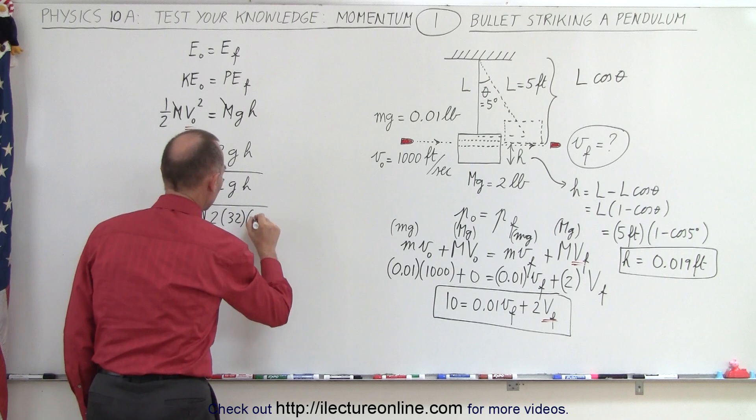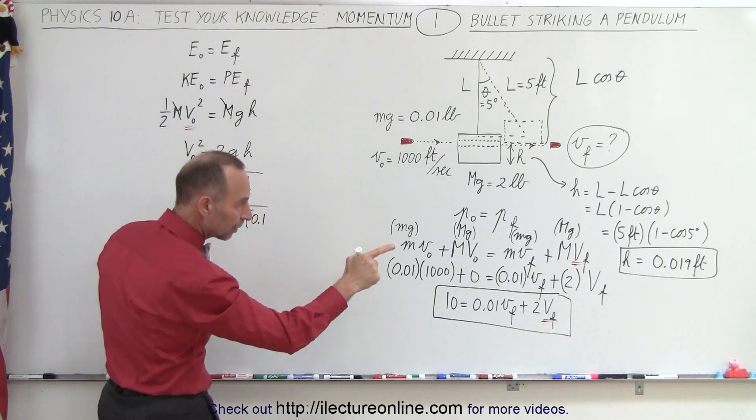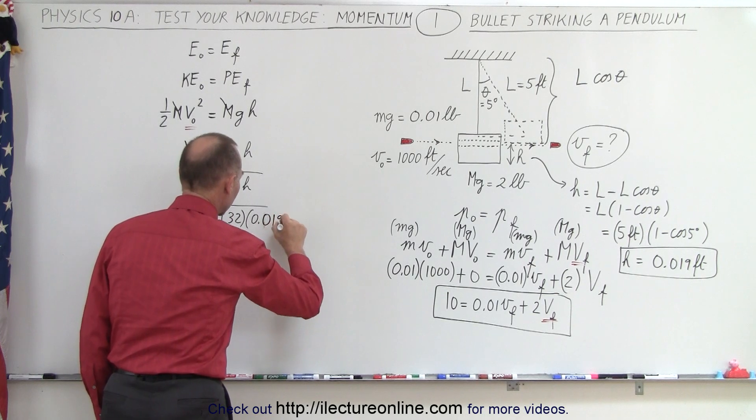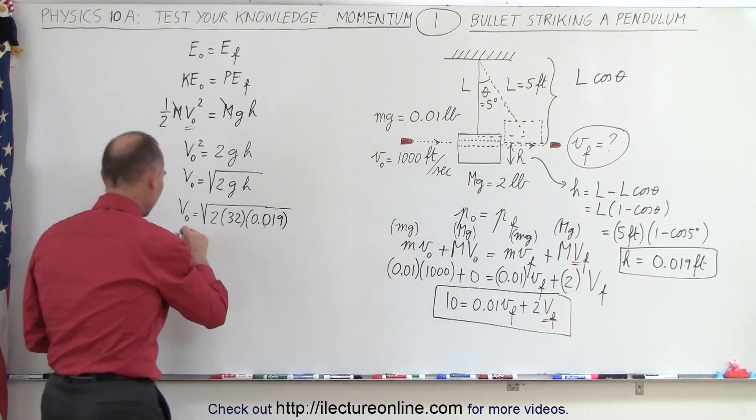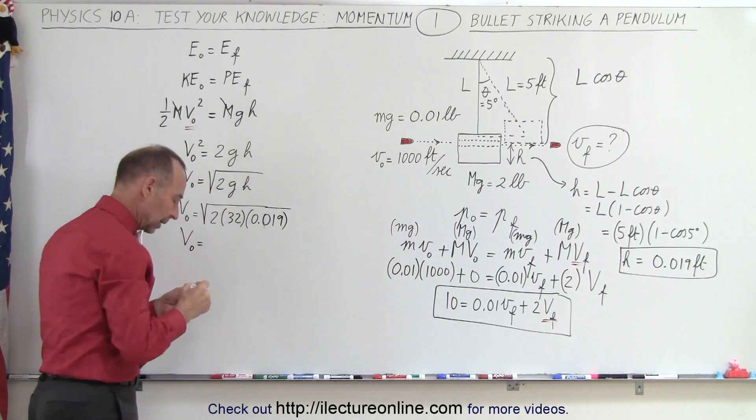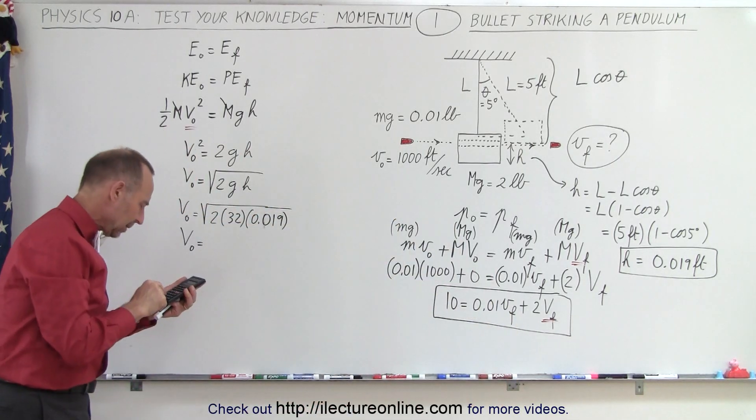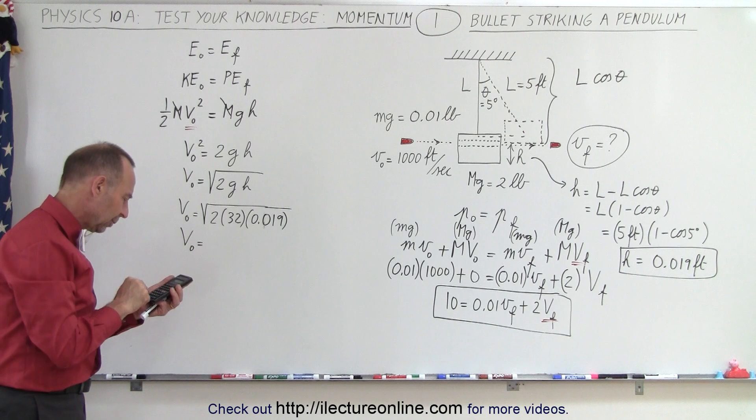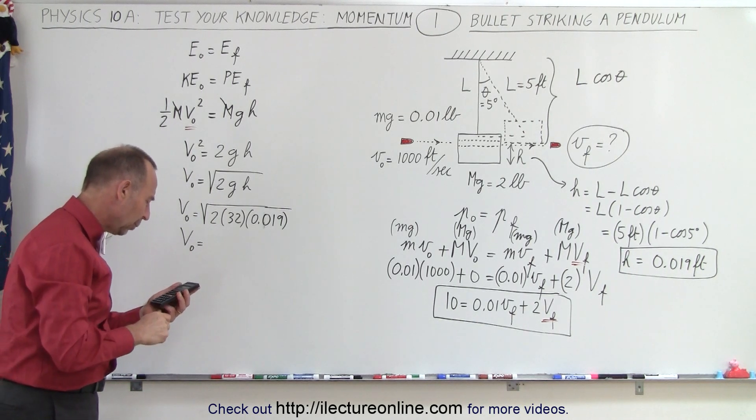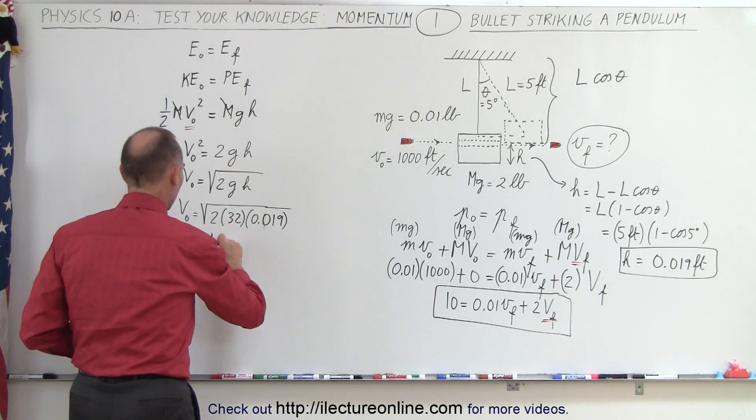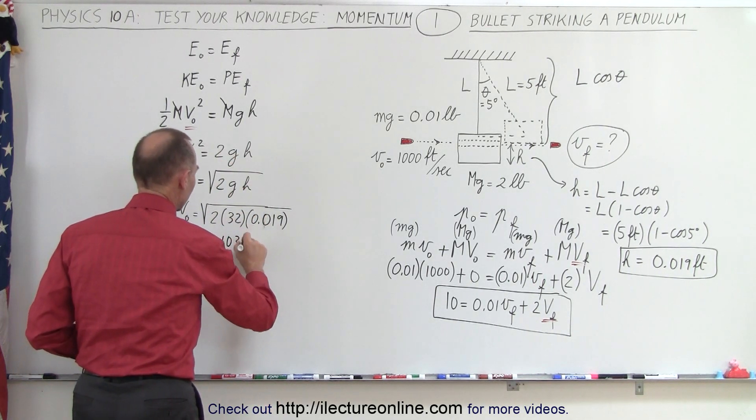and then height would be 0.019 like this, and that gives us the initial velocity of the block. So 64 times 0.019, take the square root of that, and that would be 1.103 feet per second.